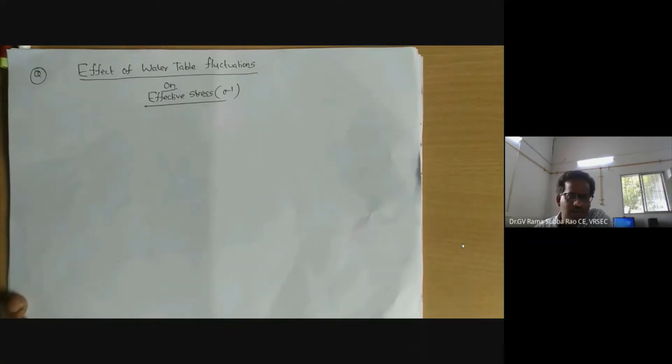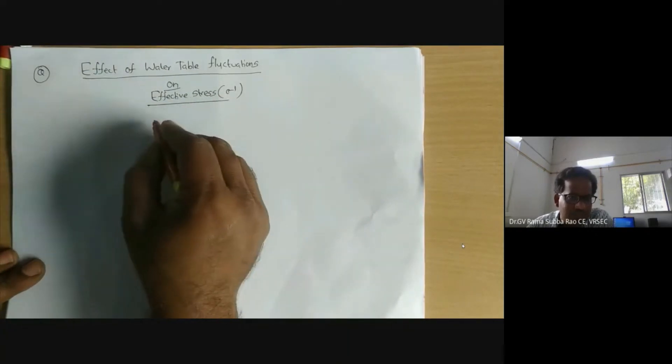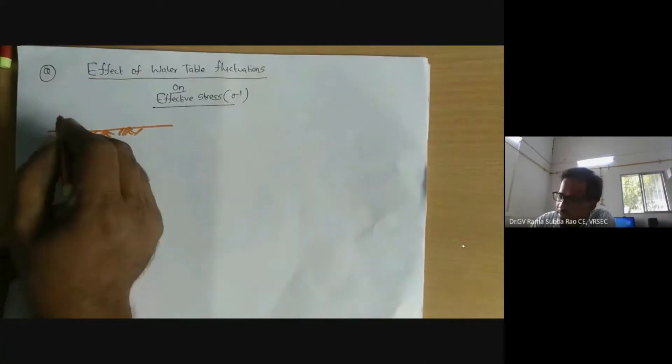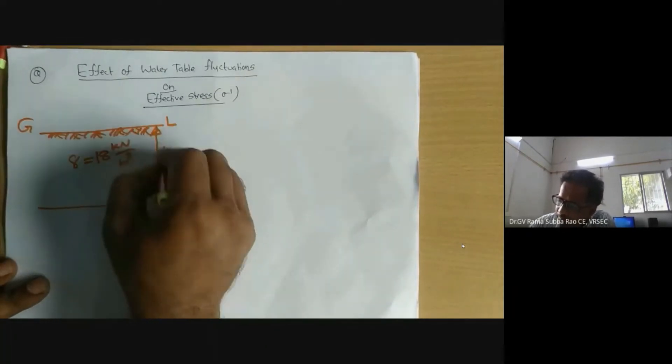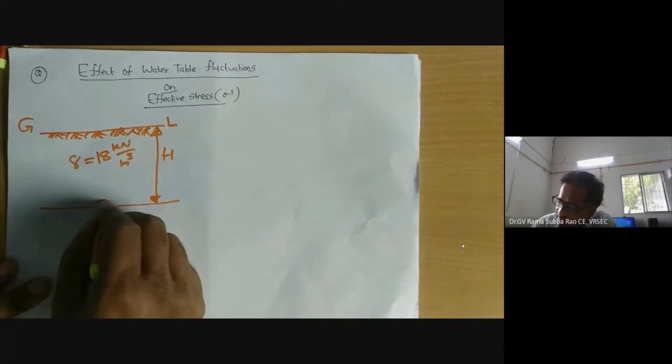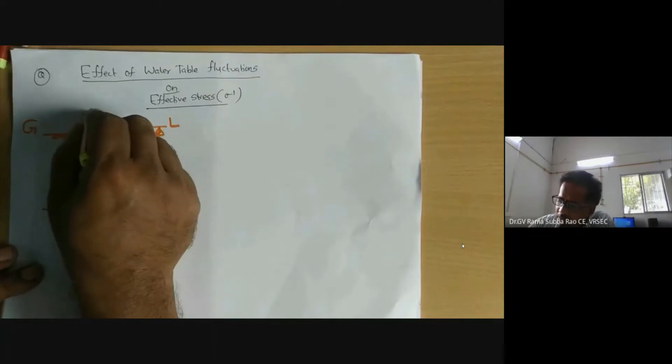Now we are going to prove how fluctuations in water table affect effective stress. This is the ground level. Let us take a soil whose unit weight, in a partially saturated condition, is 18 kN/m³. The thickness of the soil layer is h, and I want to calculate the vertical stress at any point P. Right now the condition is: no water table.